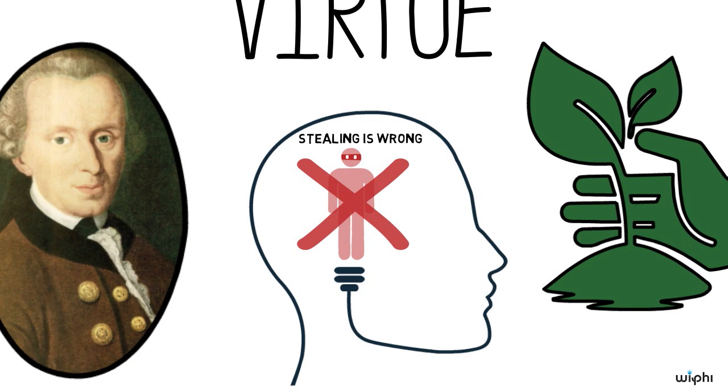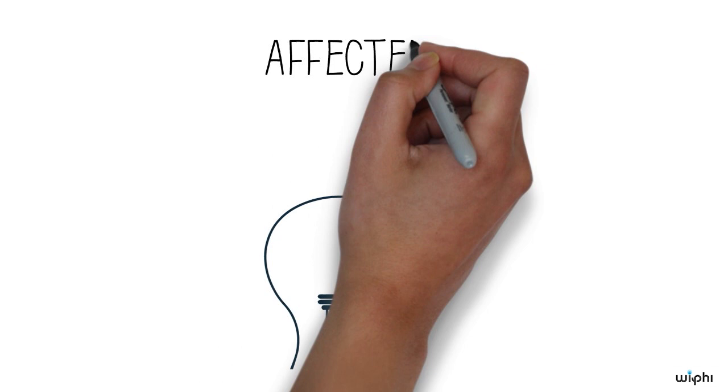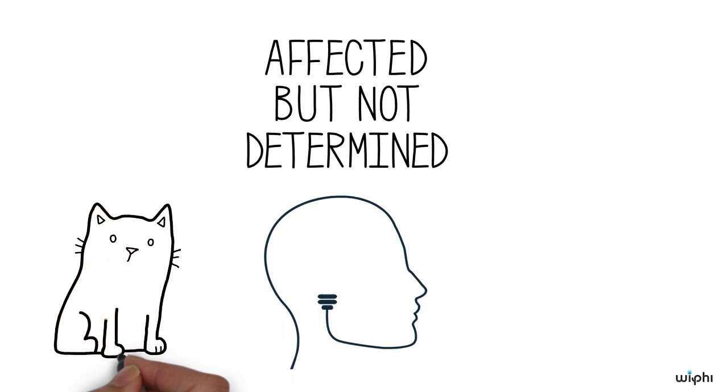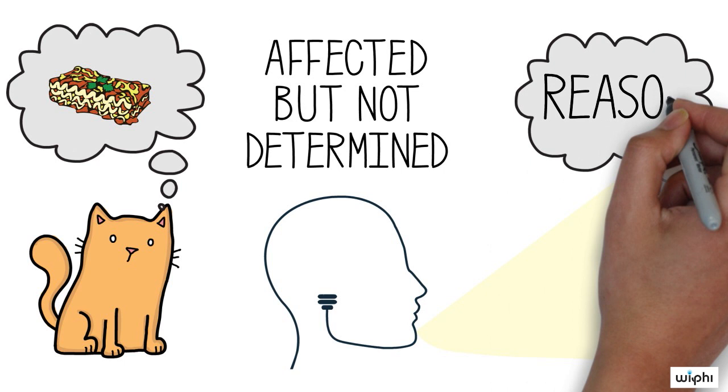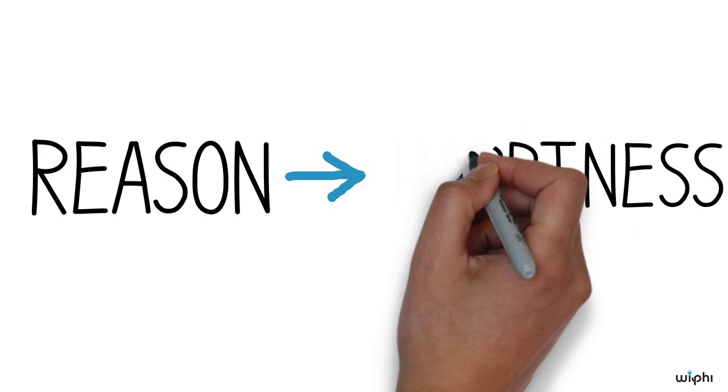This capacity for virtue is unique to human beings because human wills are affected but not determined by bodily desires. This characteristic places our wills between those of non-rational animals, whose wills are determined by bodily desires, and those of divine beings, whose wills are determined by reason.